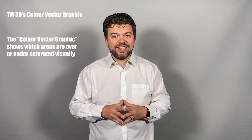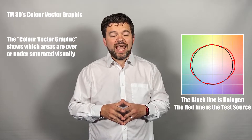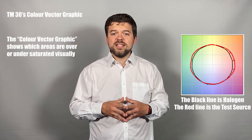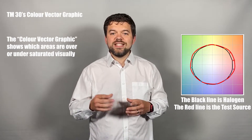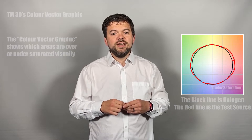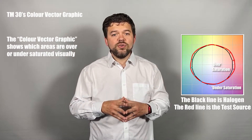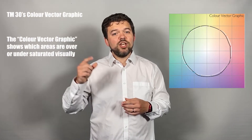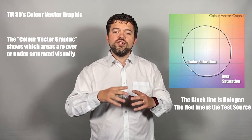The last piece of the puzzle is the colour vector graphic. This diagram shows a black ring of reference illumination, representing how a tungsten source saturates colour. Over the top of that ring we see the test source, which is not always perfectly circular. When the test source ring dips inside the reference, there is an area of undersaturation; where it extends outward, there is increased saturation. In this diagram we can see an LED source which slightly oversaturates in greens and violets, and undersaturates in oranges and teals.